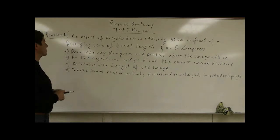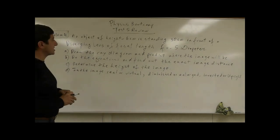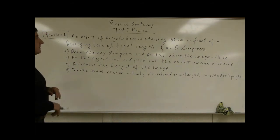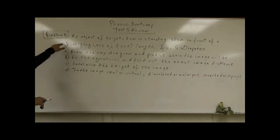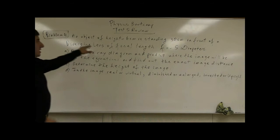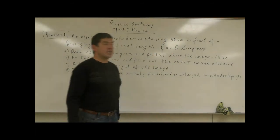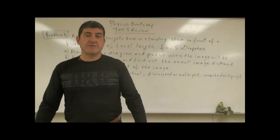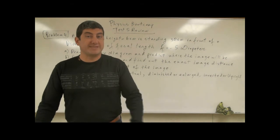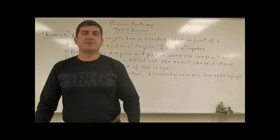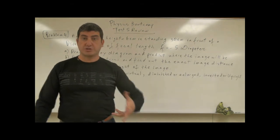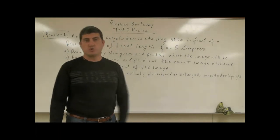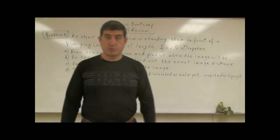Problem 4 says an object of height equals 6 centimeters is standing 30 centimeters in front of a diverging lens of focal length F equals negative 5 diopters. So the focal length of the lens is given here, but not in centimeters — it's given in diopters, which is the units that optometrists use to give you a prescription.